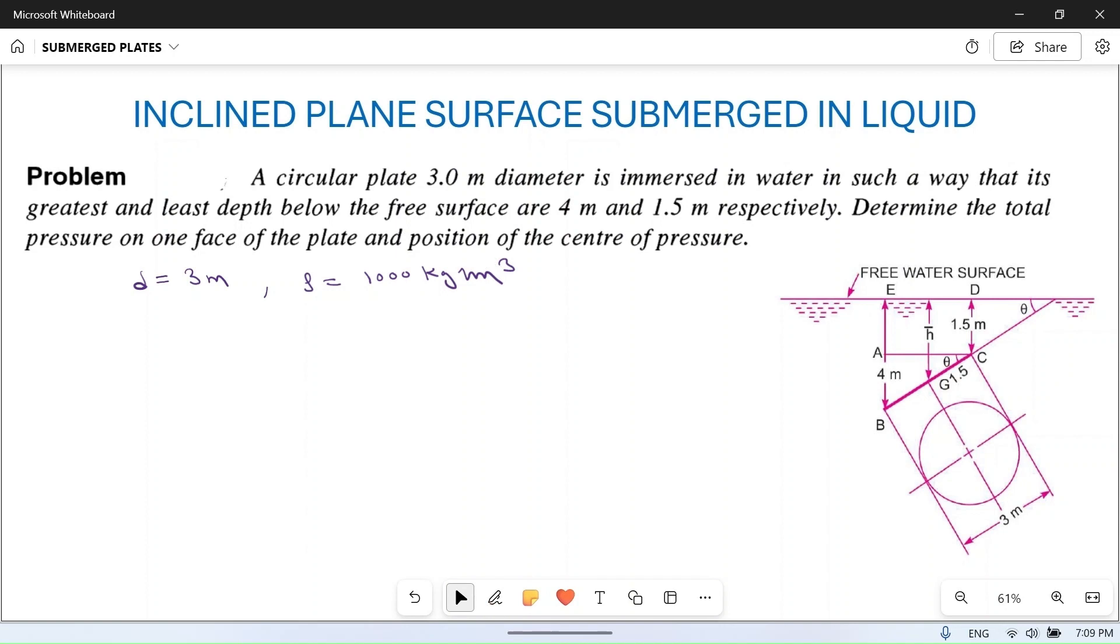The greatest and least depth below the free surfaces are 4 meter and 1.5 meter. The greatest depth is 4 meters and least is 1.5 meters respectively. Determine the total pressure or force on one face of the plate and position of the center of pressure. We have to find force and center of pressure, which is h star.